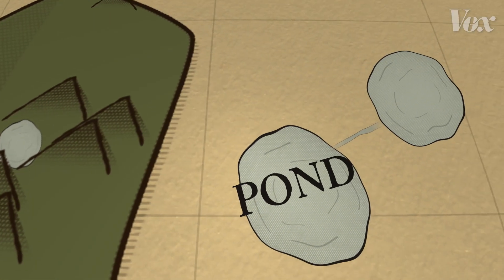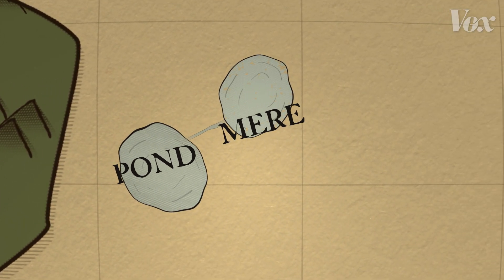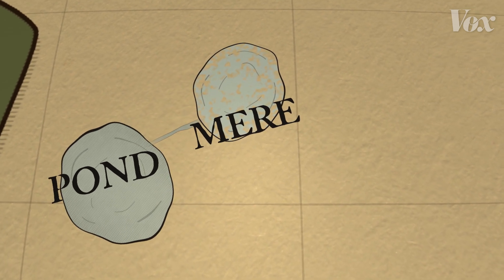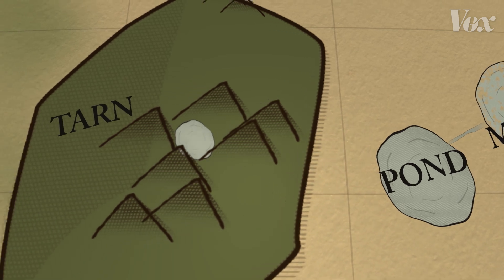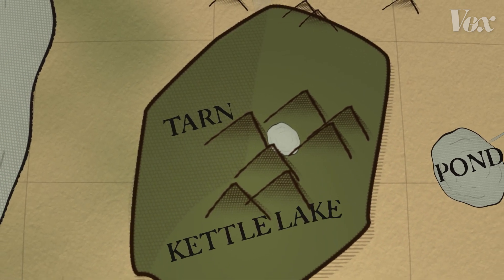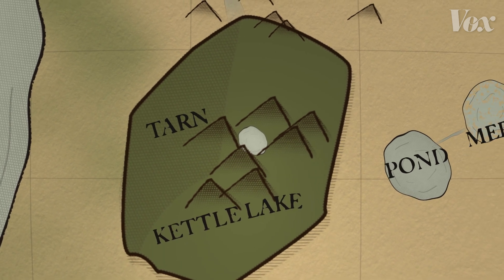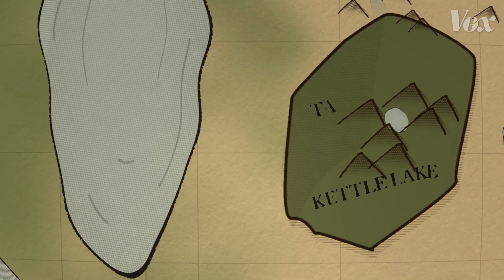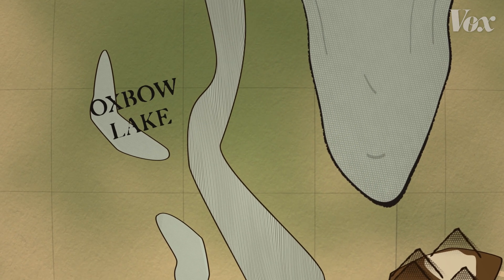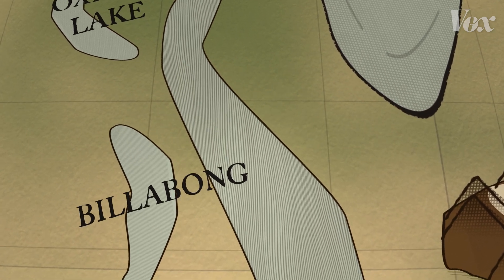A pond is a particularly small lake, while a mere is a notably shallow one — think of a big puddle. A tarn is determined by its location; you'll find it on a mountain, usually in a spot carved out by a glacier. A kettle lake is similar, but it forms when a melting glacier's water shapes a mountain. An oxbow lake is special too — it comes from a river that changed course and left a lake behind. In Australia, it's called a billabong.